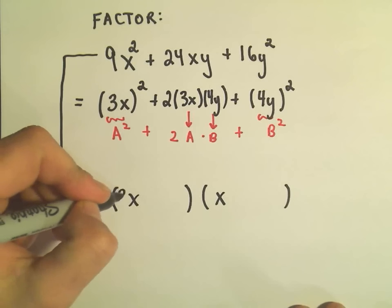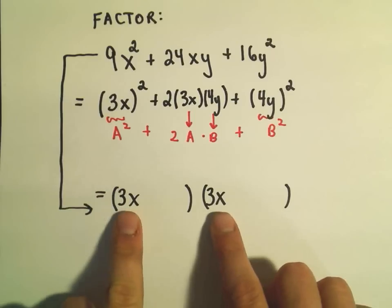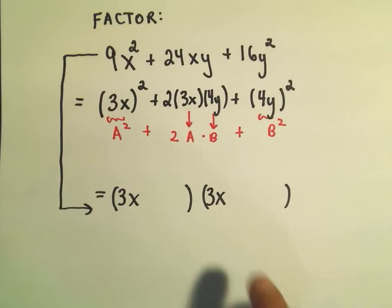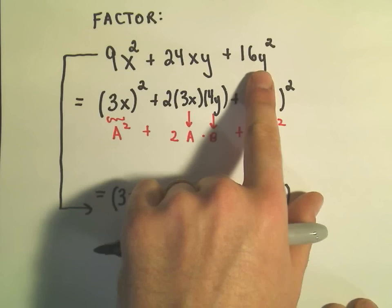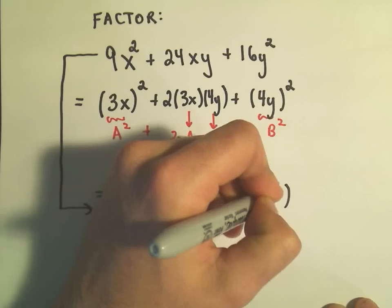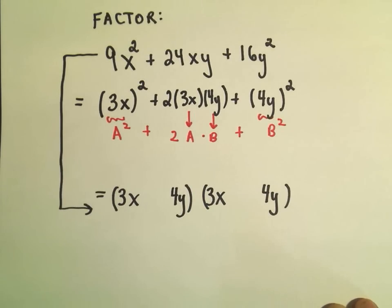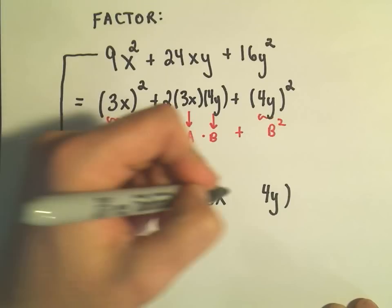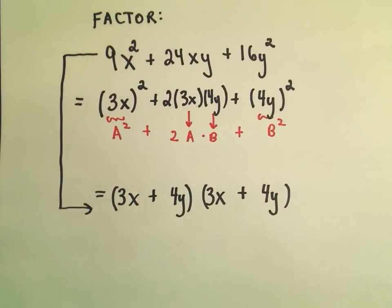So if I take the square root of 9, I'll just get 3 and 3. So if I multiply those, I get my 9x squared. The same thing to get the 16y squared. I could use a positive 4y and a positive 4y. And then I recognize that the sign in the middle is positive, which means I would need two positives in the middle.